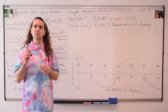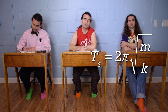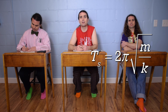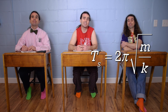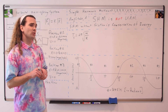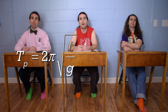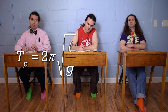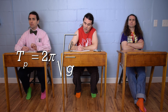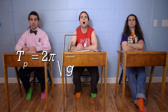What is the period of a mass-spring system? The period of a mass-spring system equals two pi times the square root of the mass of the object divided by the spring constant. What is the equation for the period of a pendulum in simple harmonic motion? The period of a pendulum equals two pi times the square root of the length of the pendulum divided by the acceleration due to gravity. The length of the pendulum is specifically the distance from the center of suspension at the top of the string to the center of mass of the pendulum.